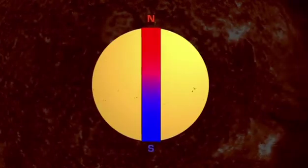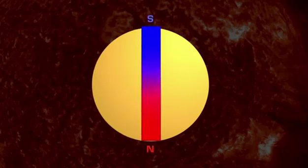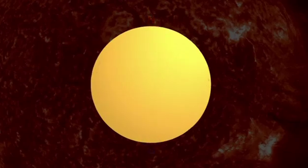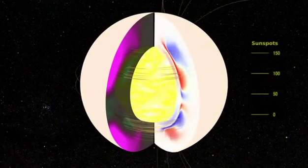Every 11 years, the Sun's poles flip. North becomes south, and south becomes north. So every 22 years, the poles return to the position where they started the cycle.